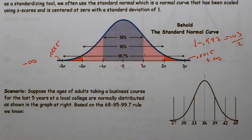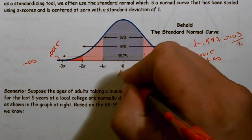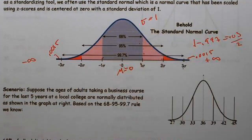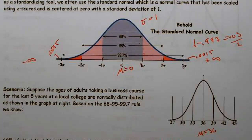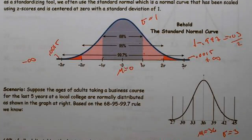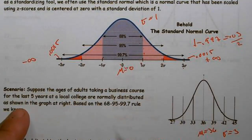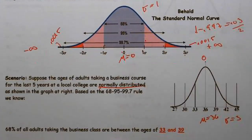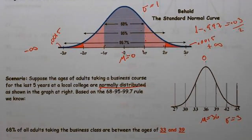Let's look at a simulated real-life example. The mean is always at the center — for a z-score the mean is zero and standard deviation is one. In this example we see a mean of 36, and each individual difference is three, so the standard deviation is three. We're told the ages of adults taking a course are normally distributed, so we can use the standard normal probabilities and convert everything using z-scores to get a mean of zero and standard deviation of one.